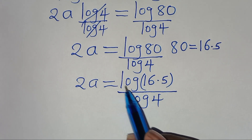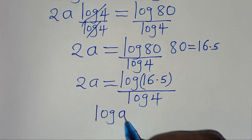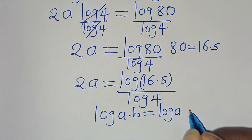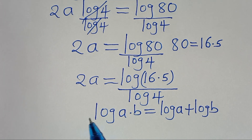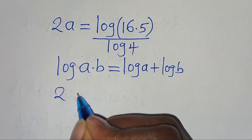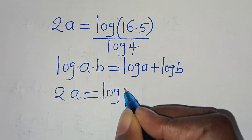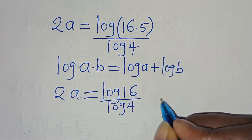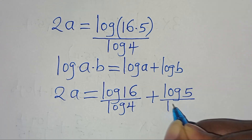Now log(16 × 5) is in the form of log(a × b), which can be expressed as log a plus log b. Applying this log product property, we have 2a equals log 16 divided by log 4, plus log 5 divided by log 4.